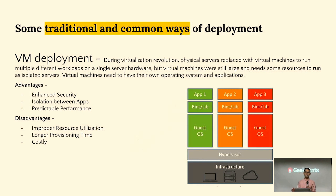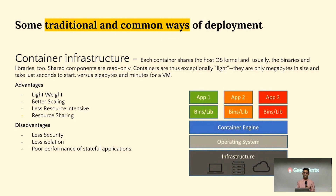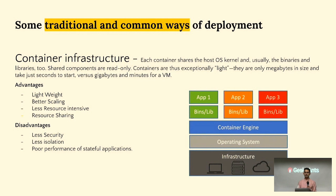Then came a phase where people wanted faster boot times over strict security — that's where container infrastructure came in. Similar to the VM stack, we have an operating system, a container engine — commonly the Docker engine or Docker daemon — and on top sit binaries, libraries, and the application. These containers running on the underlying node share resources, which solves faster boot-up times, but comes with less security and less isolation.